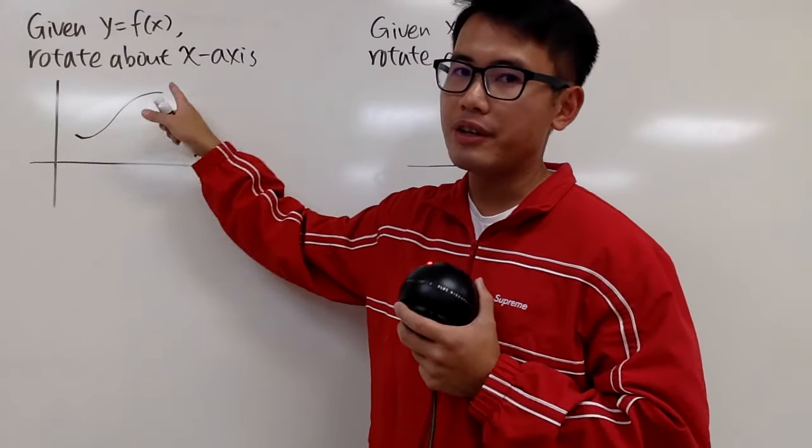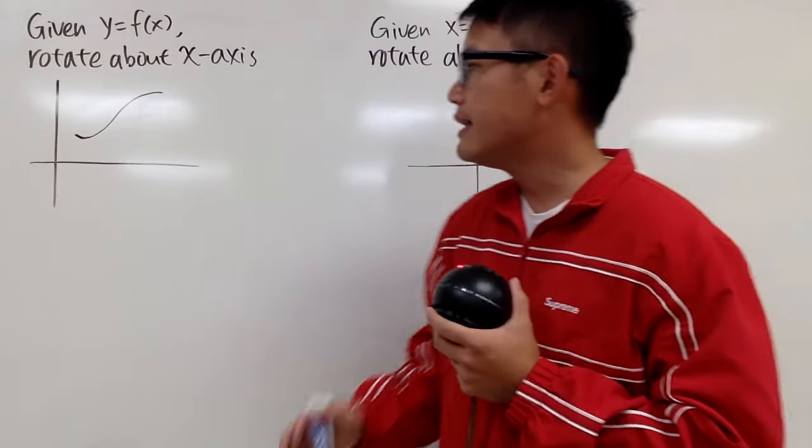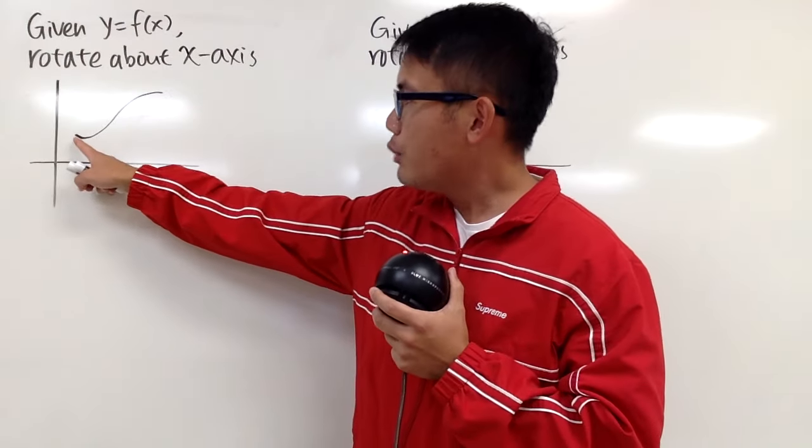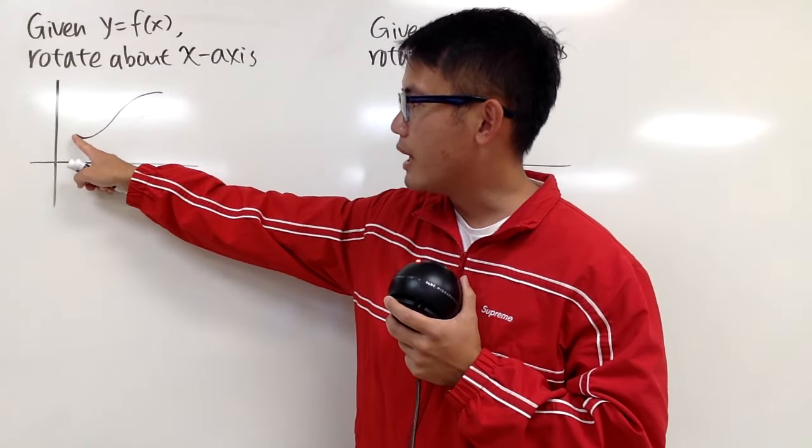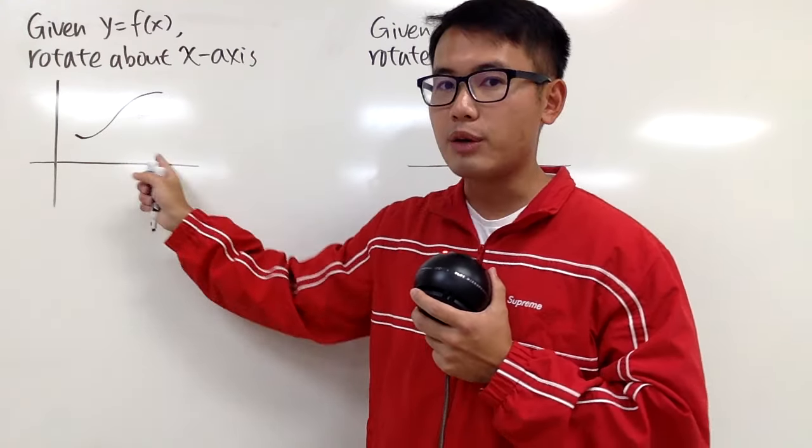Suppose we have a curve right here, and suppose that we are given y is a function of x that describes this curve, and it's similar to the area video that we have. In the area situation, we want to find the area under this curve. So that means you go down from the curve to the x-axis, so you want to find the area of that region.